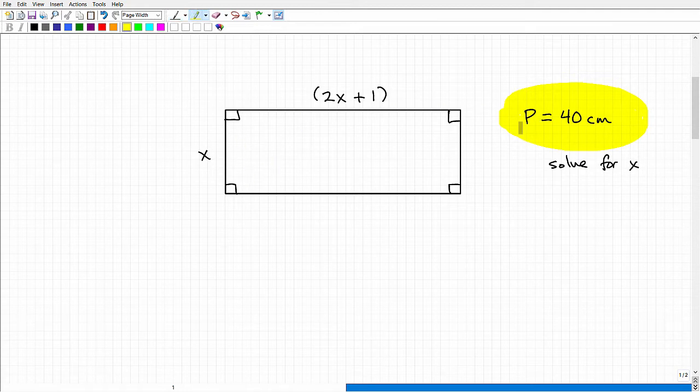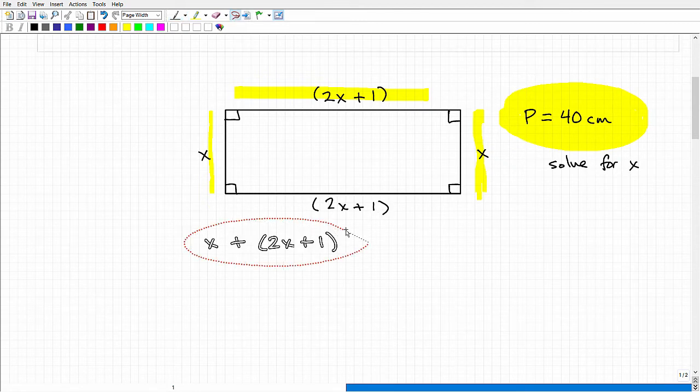The perimeter is the sum total around this rectangle. I need to add up this and this, so that's x plus 2x plus 1. That gives me halfway around the rectangle. Now I need this length. In a rectangle, opposite sides are congruent, meaning they're the same length. So this would also be x, and this side would also be 2x plus 1.